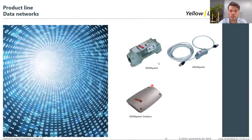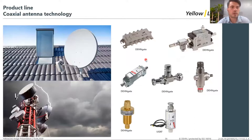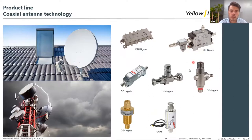For data networks and Ethernet applications we have the DENT PATCH and DENT PATCH outdoor. For telecommunication products we have the BLITZDUCTOR and BLITZDUCTOR Connect for telephone systems, as well as the DENT RAPID LSA. For coaxial antenna technology we have the DENT GATE, which protects coaxial systems and antennas, with different modules and types based on the required protection.